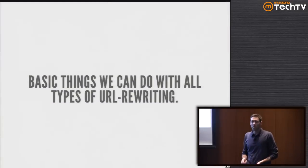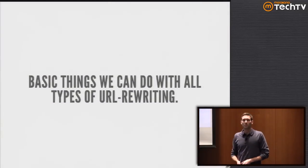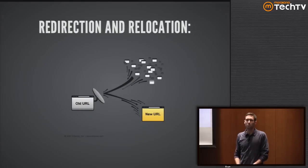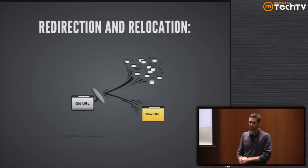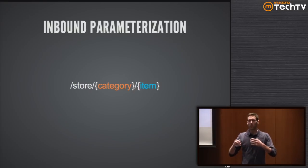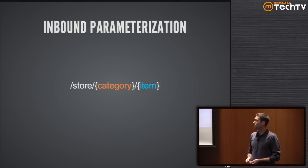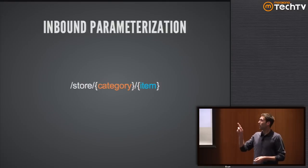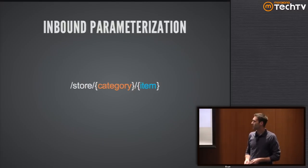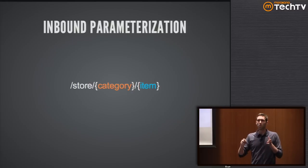There are a couple of basic things we can do with all types of URL rewriting. We can do redirection and relocation - to address missing or relocated resources. Requests hitting an old URL get sent to the new one, the browser updates itself, bad links go away, and the problem fixes itself over time. We can also do inbound parameterization - an interesting strategy for taking a query string and embedding those parameters into the path, so category and item values become part of the URL path rather than query parameters.